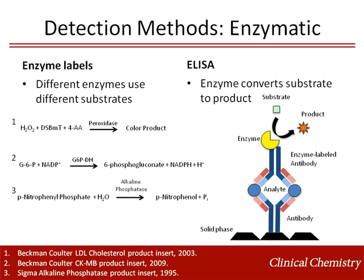Enzyme-linked immunosorbent assays are common in the clinical laboratory and use a capture antibody and an enzyme-labeled detection antibody. Many automated instruments use an enzyme-labeled detection antibody and a chemiluminescent substrate producing a photon for measurement.